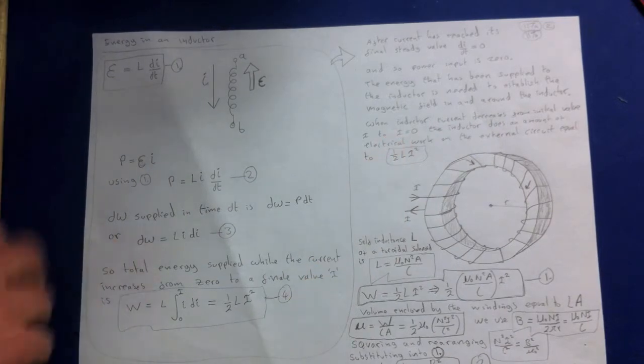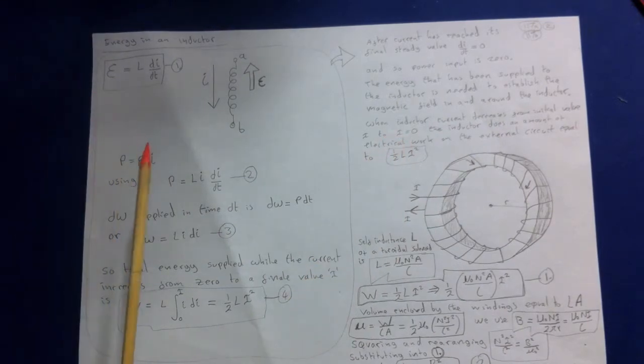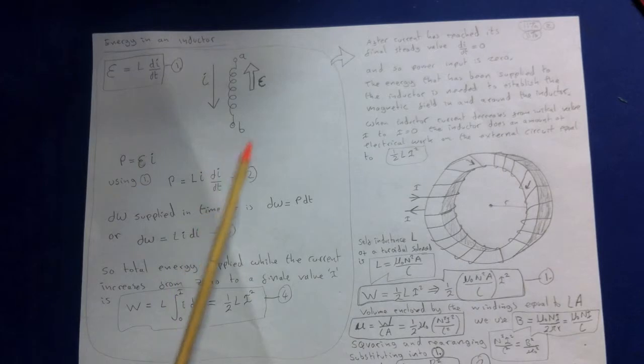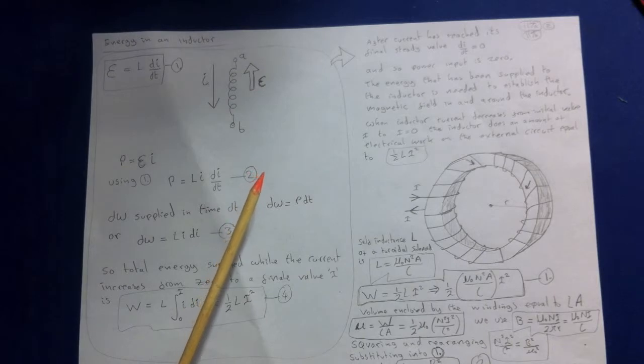When the inductor current decreases from initial value I to the reference value I₀, the inductor does an amount of electrical work on the external circuit equal to half L I squared. For example, if the current in the circuit is interrupted suddenly by opening a switch, the energy may be dissipated in an arc across the switch contacts.